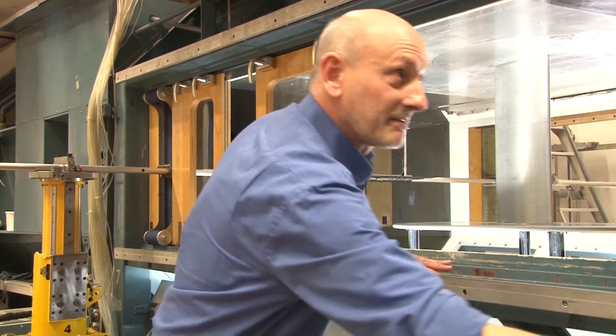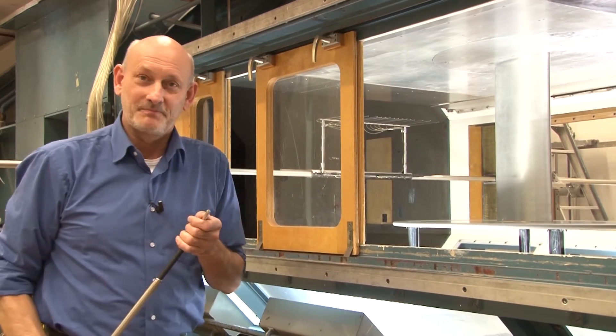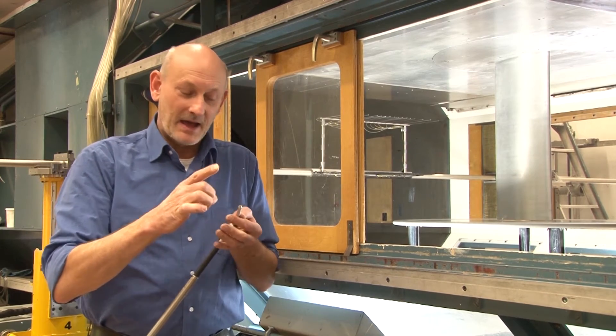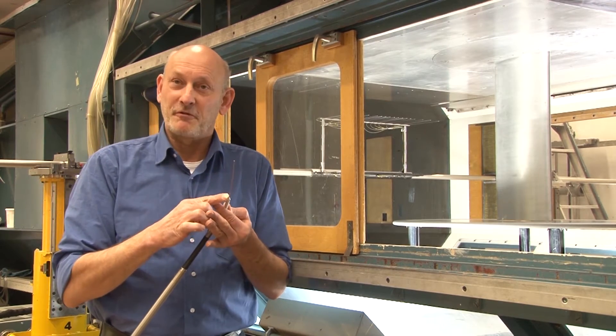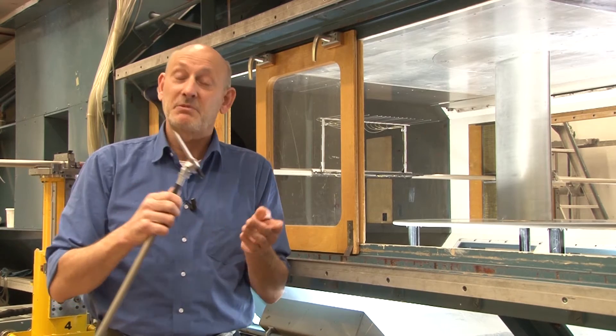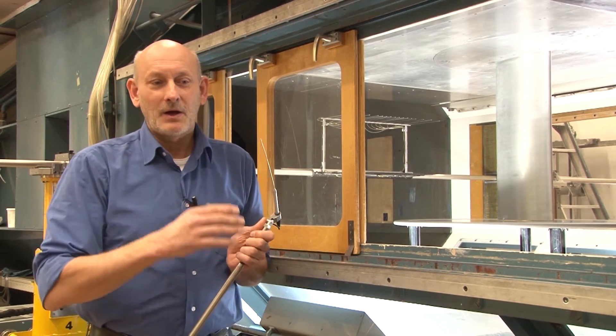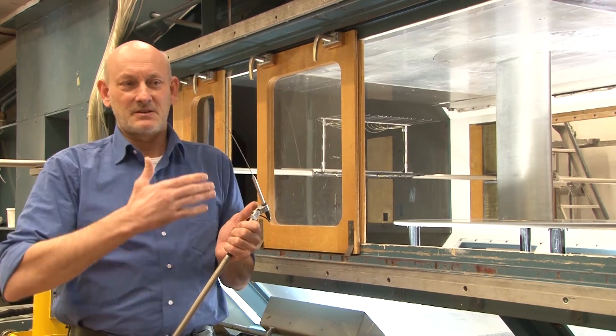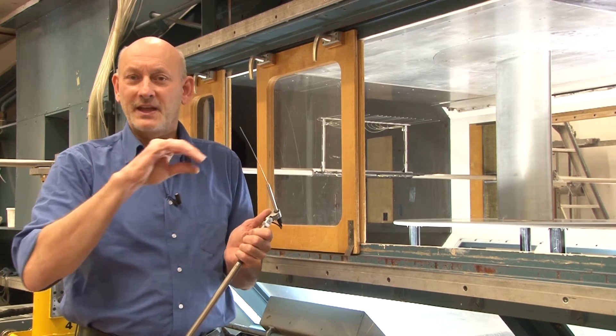What I have here is a stethoscope. This is a small tube connected to a microphone and the microphone is connected to an amplifier. Now a laminar boundary layer has a nice flow, smooth in layers.